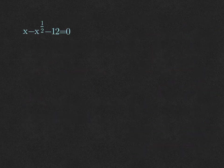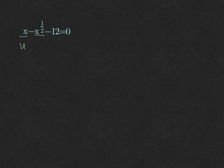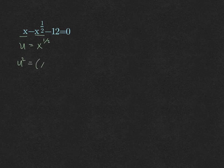Let's try a couple more examples. If we have x minus x to the one-half minus 12, first we check that the middle term x to the one-half, when squared, gives the first term x — and it does. So we set u equal to that middle variable, x to the one-half, and then square both sides: x to the one-half squared is x.